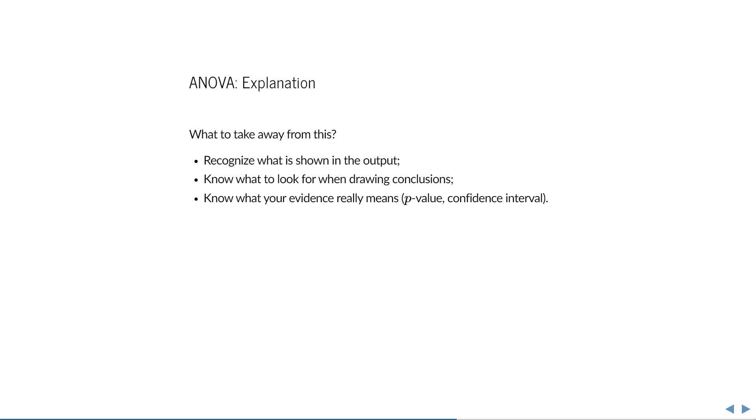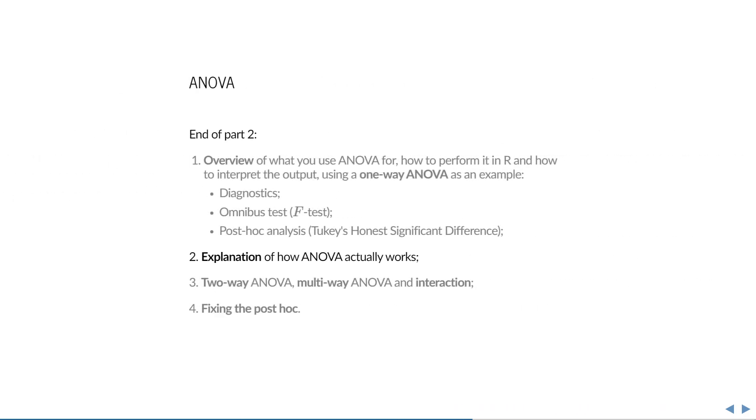So what should you take away from all of this? The most important things are that you recognize what is shown in the output of an ANOVA, that you know what to look for when drawing conclusions, and of course that you know how to write such a conclusion. And that concludes the second part of the lecture.